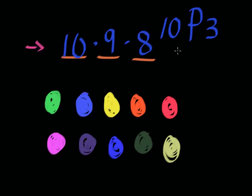This equation can also be represented as ten factorial divided by seven factorial, because seven factorial is no longer part of this equation.